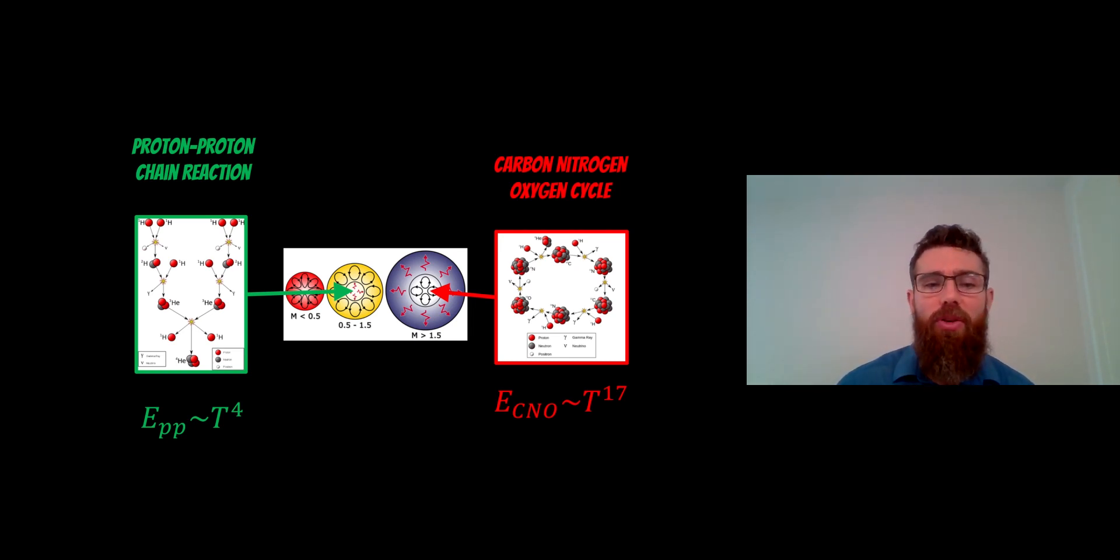So for solar mass stars, they have a radiative energy transport mechanism and they are predominantly generating energy due to the proton-proton chain reaction. Now the energy production rate is a function of the temperature to the fourth power. So as you increase the temperature, the energy produced by this chain reaction increases by that power. So they have a radiative energy transport mechanism in the core. Now as you get to bigger stars, they have a convective core.